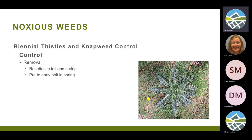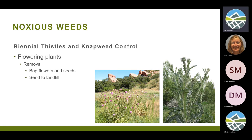For all of the biennial thistles and knapweed, what's number one? Prevention. Then removal — the time to remove these is at the rosette stage or at the very early bolt before any flower bud is formed. You want to get the top part of the root so it won't grow back; that way you can leave them on the ground without bagging them. If you wait too long, you can certainly do removal when they're flowering, but with scotch thistle you're using one huge garbage bag per plant — getting heavy and expensive to haul back to your vehicle and then to the landfill. Much better to get out there early before any flower bud forms.